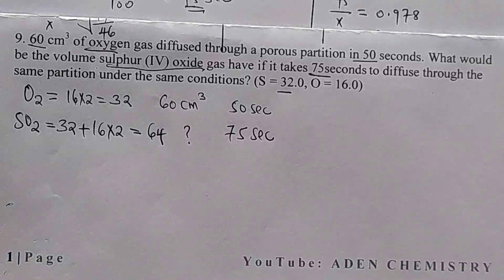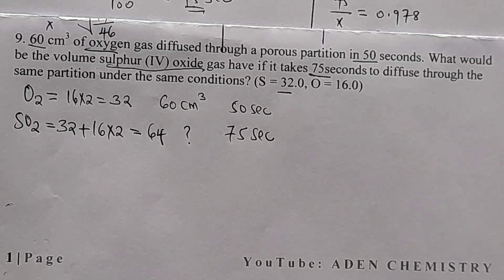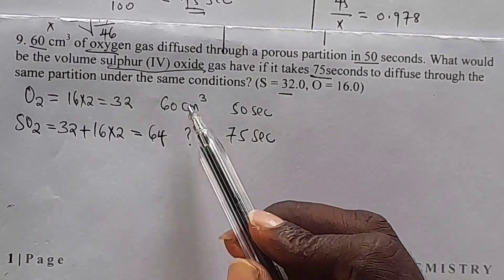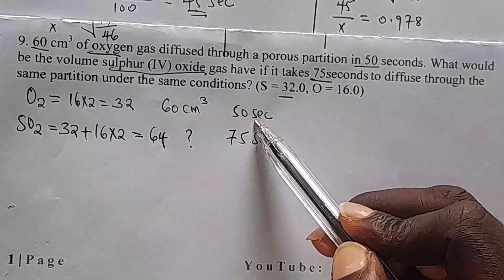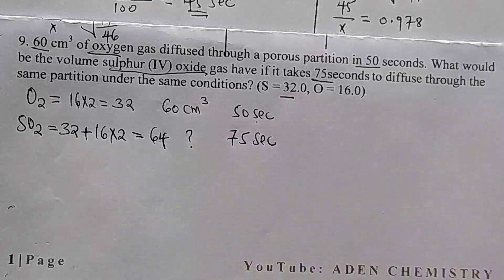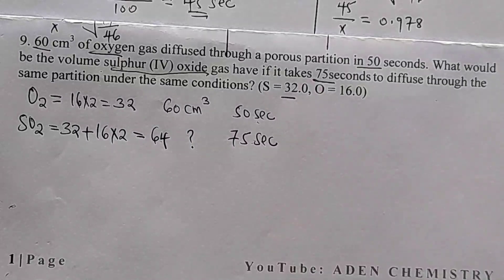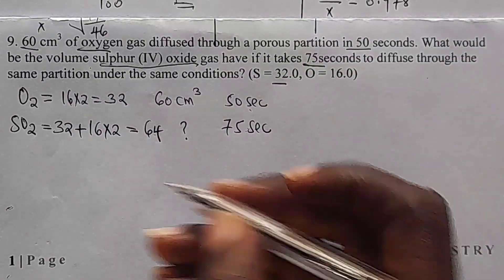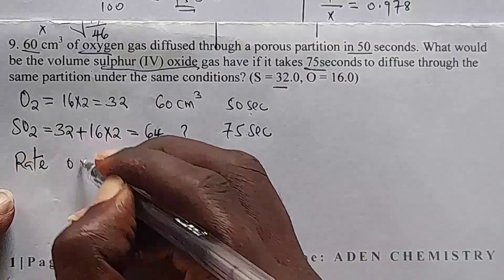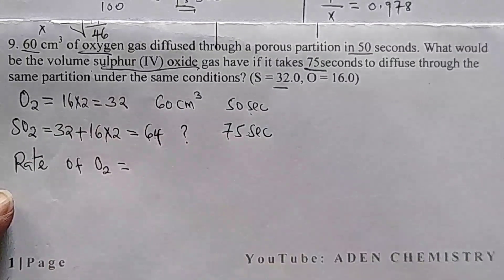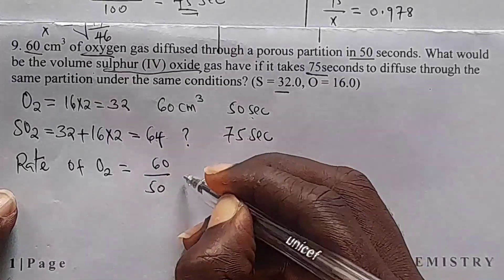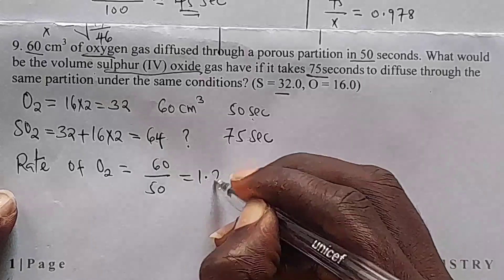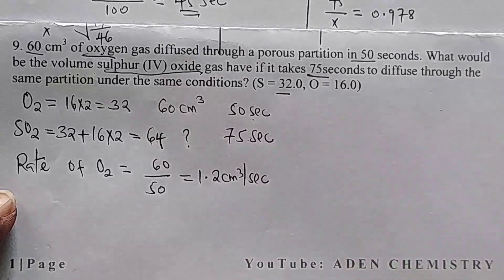Here we want to use rate with relative molecular mass. We need to get the rate of oxygen gas first. Rate = volume ÷ time = 60 ÷ 50 = 1.2 cm³ per second. For sulphur dioxide, we don't have the rate — we take that as x.